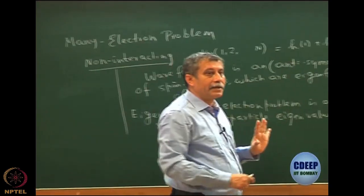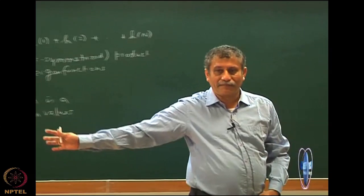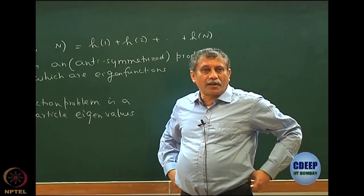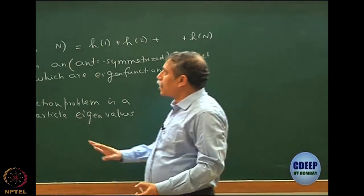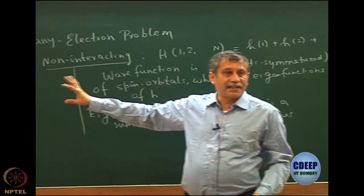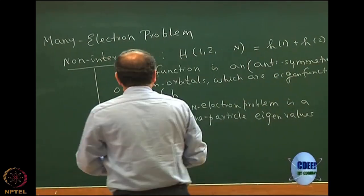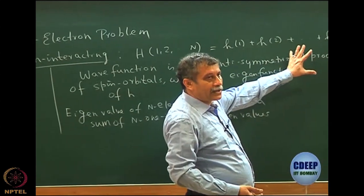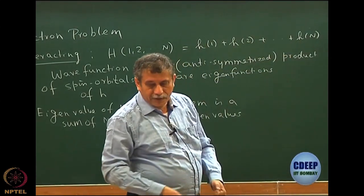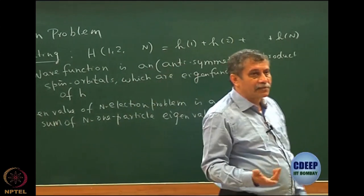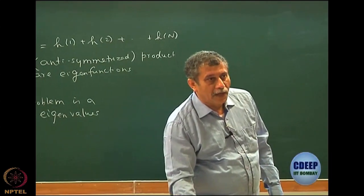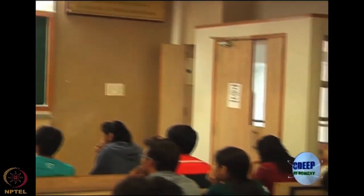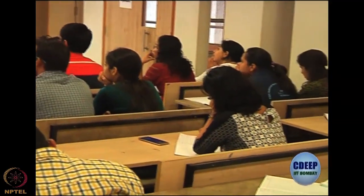This is really not called a many-electron problem because it is actually a one-particle problem — you just construct the n-particle problem by trivial product and sum. When we talk of the many-electron problem henceforth, it essentially means an interacting many-electron problem, where the Hamiltonian cannot be written as a sum of n one-particle Hamiltonians. Those are the problems of interest because they cannot be trivially solved.